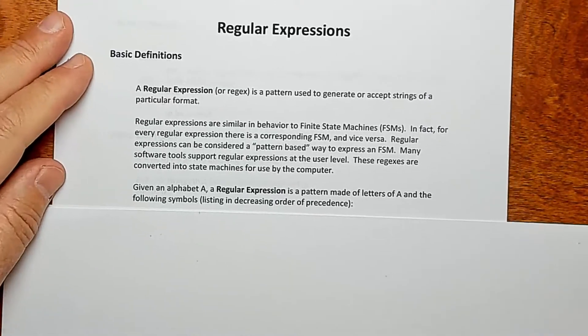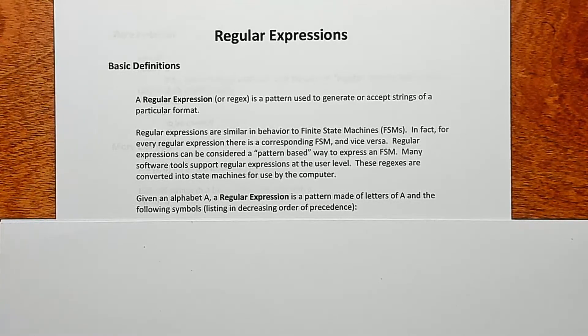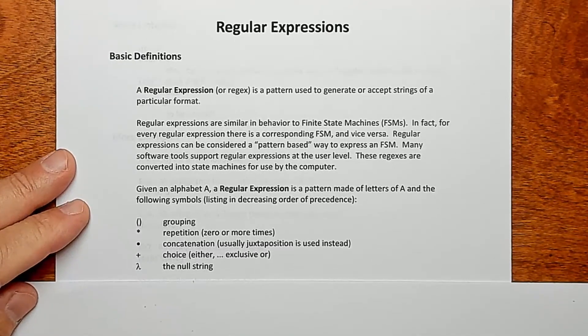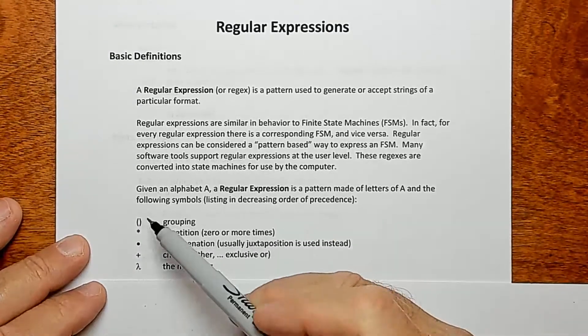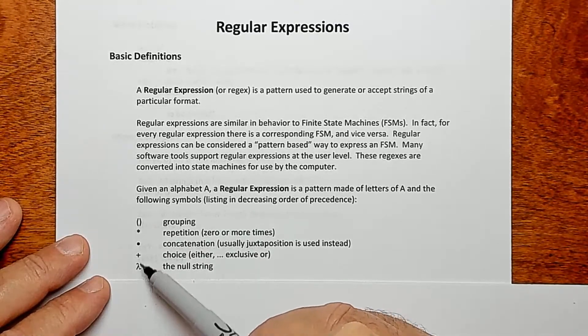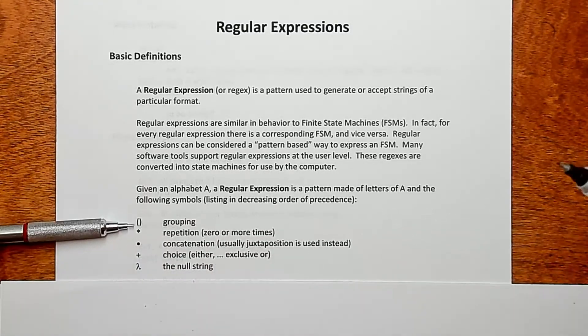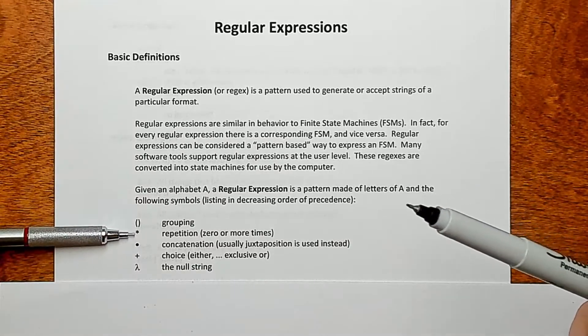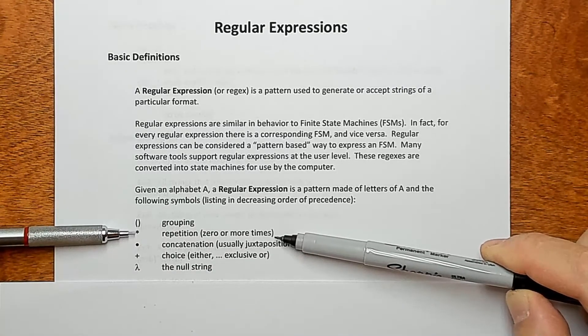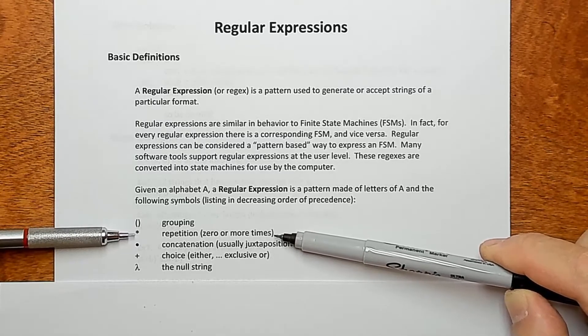So the way this works is we have an alphabet A with certain reserve symbols in it, and then we have these other special symbols that are used, and we combine these to create patterns. So these are the symbols that we can use in addition to our alphabet. These are listed in order of precedence, so grouping has the highest precedence. Just like in regular algebra, you always do what's in the parentheses first. Then the next thing you do is the star operator, which indicates repetition.